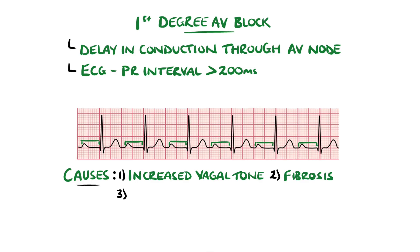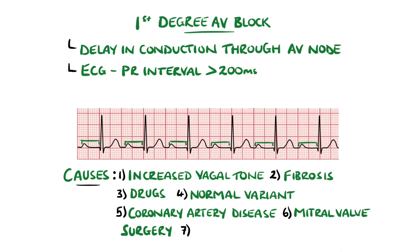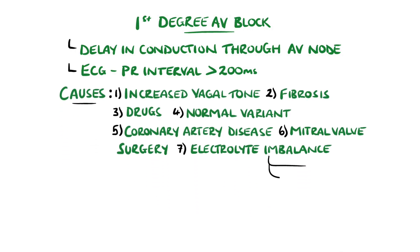Other causes include AV node blocking agents like beta blockers, calcium channel blockers, or digoxin, and it may also be a normal variant. In some instances, it can be the result of coronary artery disease, mitral valve surgery, or electrolyte imbalances like hypokalemia and hypomagnesemia.